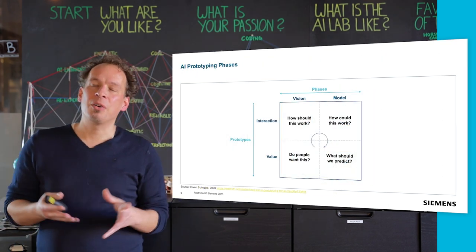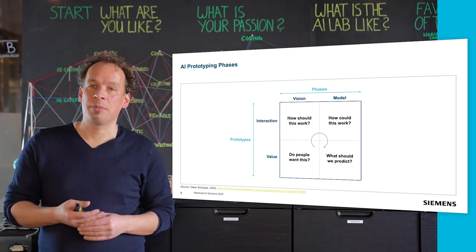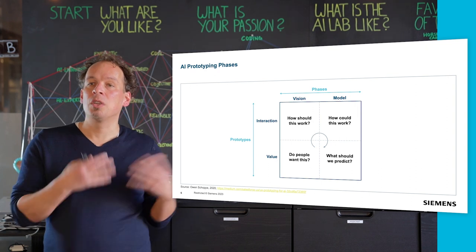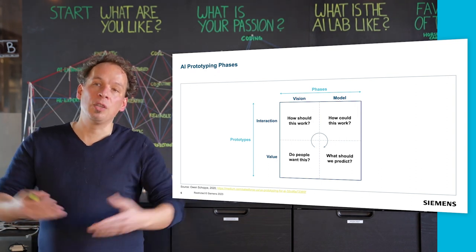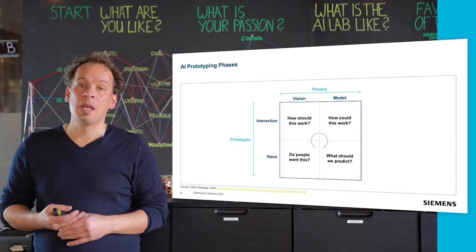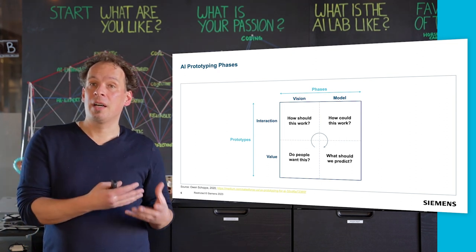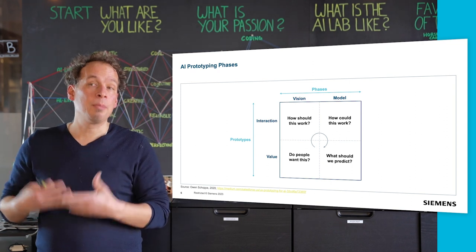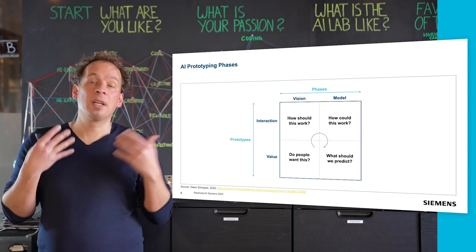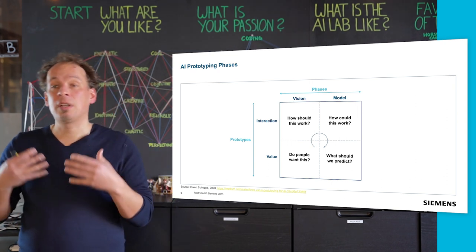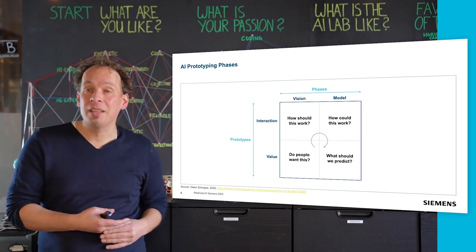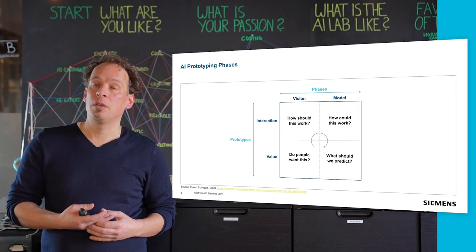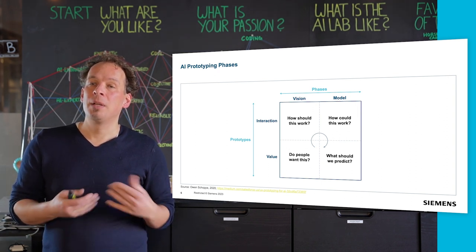AI prototypes can be structured along two different angles: the phases and the prototypes part. On the prototypes part, the question is what do you want to actually prototype — the interaction or the value? From the phases side, how mature do you want to be — is it the vision or the model? Depending on your goal and aspiration, prototyping helps you build and add probabilities to it.